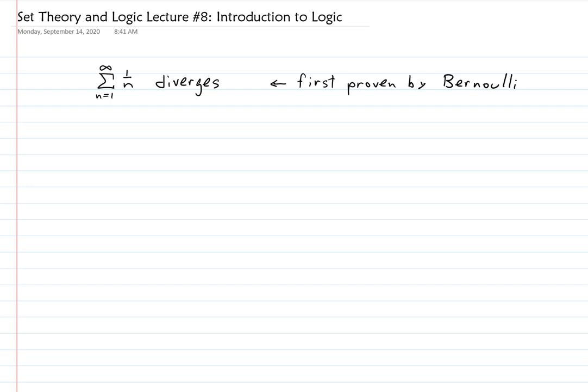He was correct when he proved that — it does diverge. However, his proof was not valid. How can you prove something that is accurate but have an invalid proof? It's because the reasoning he used does not always hold up. Specifically, the problem was that he rearranged and grouped the terms of the harmonic series.